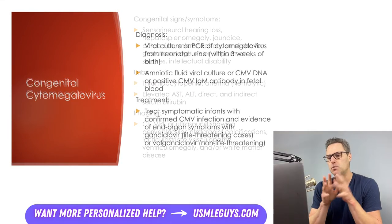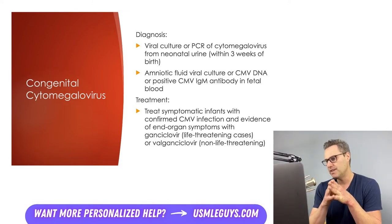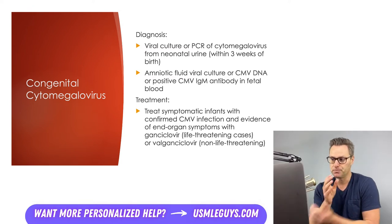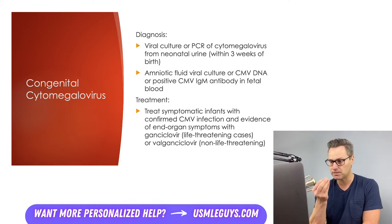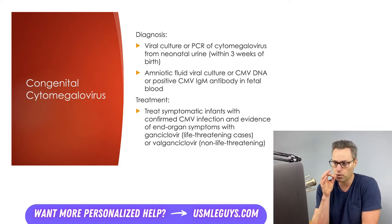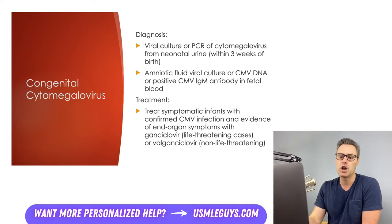Diagnosis is made with viral culture or PCR of CMV from neonatal urine within three weeks of birth, or prior to birth via amniotic fluid viral culture or CMV DNA or CMV IgM antibody in fetal blood — though these carry an elevated risk of fetal demise. Treatment for CMV is reserved for neonates with evidence of end organ symptoms: ganciclovir if symptoms are life-threatening, or valganciclovir if they are non-life-threatening.